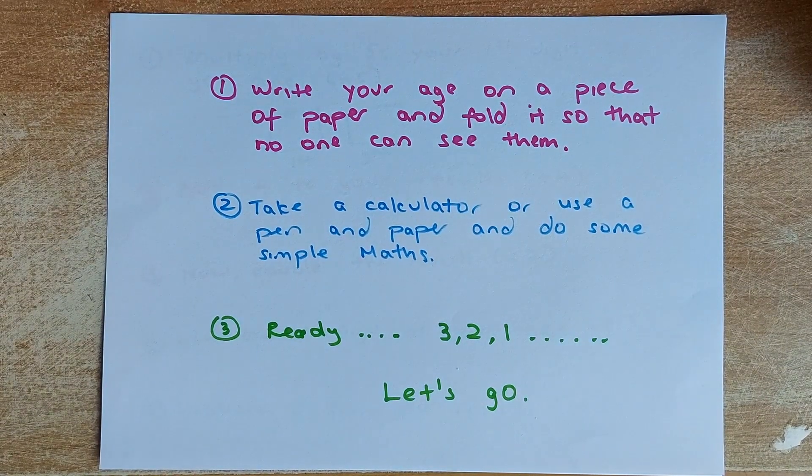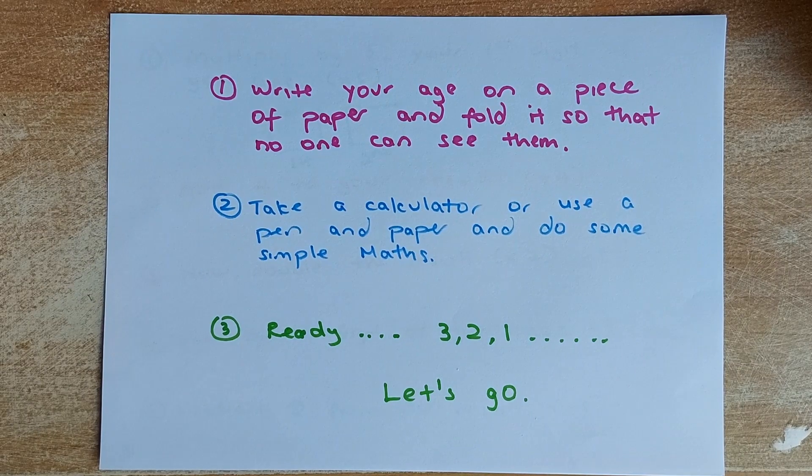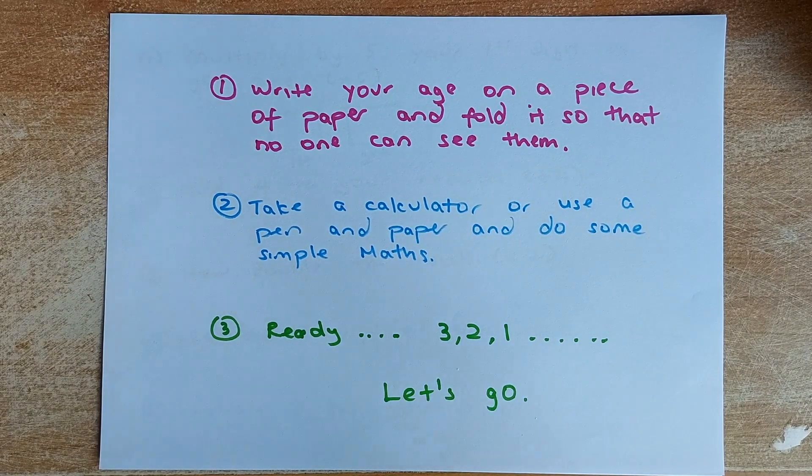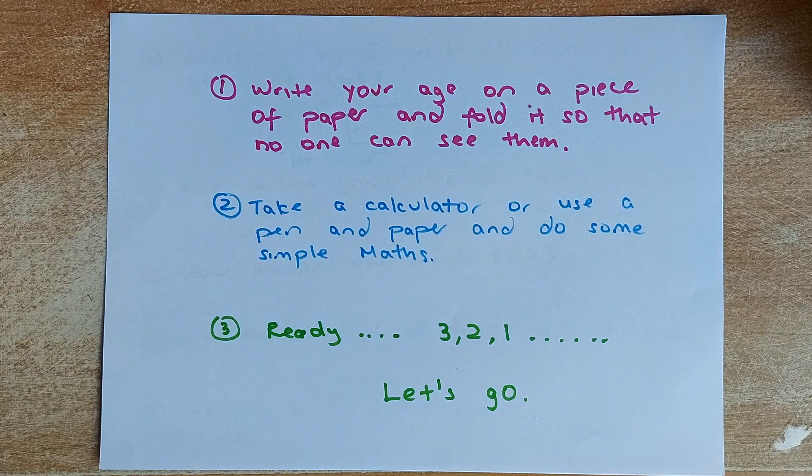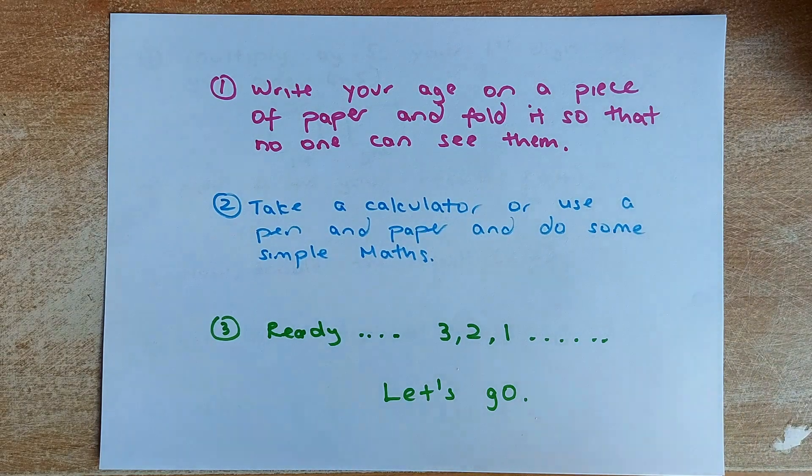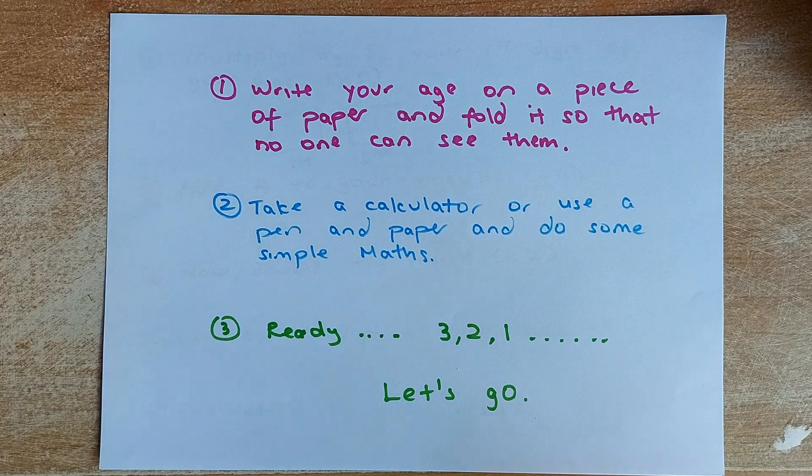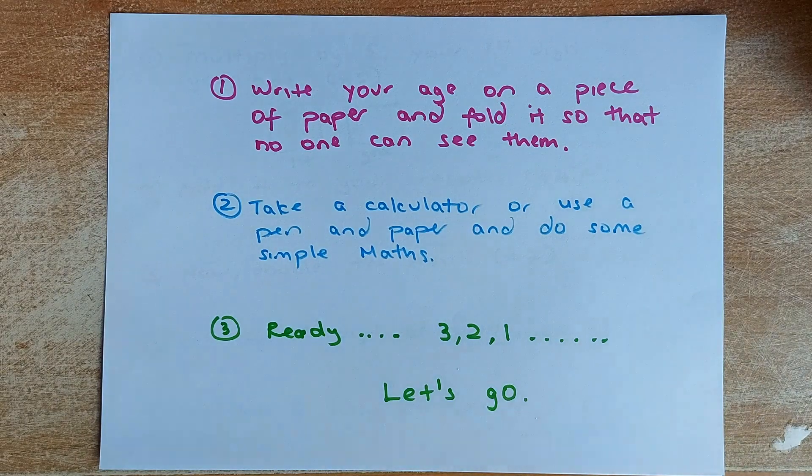Okay, let's go! First, before we start, I want you to write your age on a piece of paper. Fold it into half and place it at the side so that nobody can see it, and we're going to see that your number and the number that we're going to calculate correspond to each other.